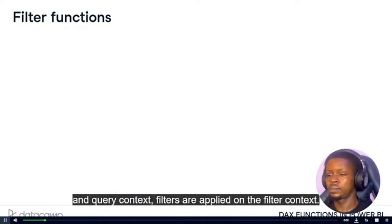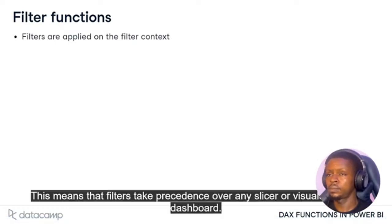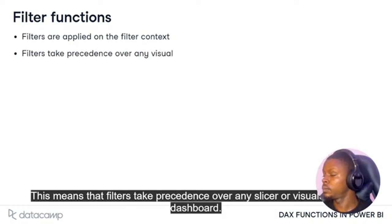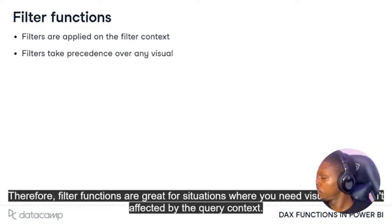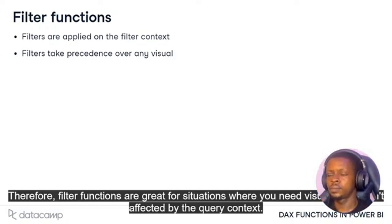In the previous chapter, you've seen that on top of row and query context, filters are applied on the filter context. This means that filters take precedence over any slicer or visuals on your dashboard. Therefore, filter functions are great for situations where you need visuals that aren't affected by the query context.